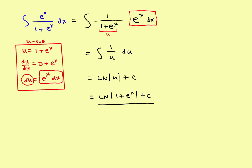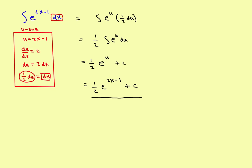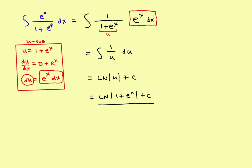In summary, on most problems you let u equal the exponent of the e function — that was the case for four of the five examples here. But sometimes, like in the last problem, letting u equal the exponent doesn't work and you must choose u differently. In that case, the problem can transform from an e to the x integral into a 1 over u integral. In the next video, we'll look at a couple of definite integrals.